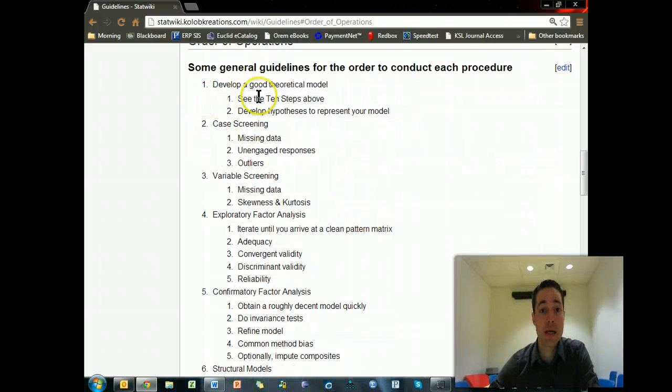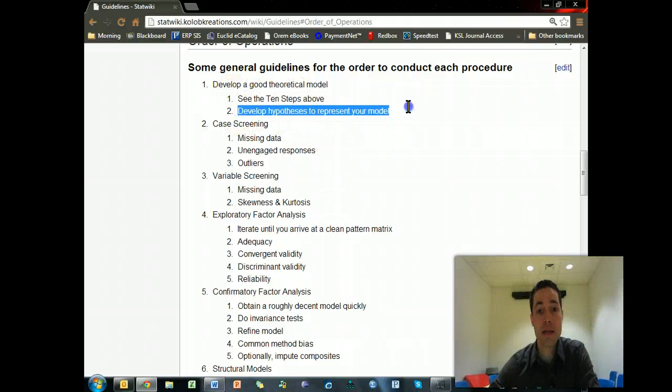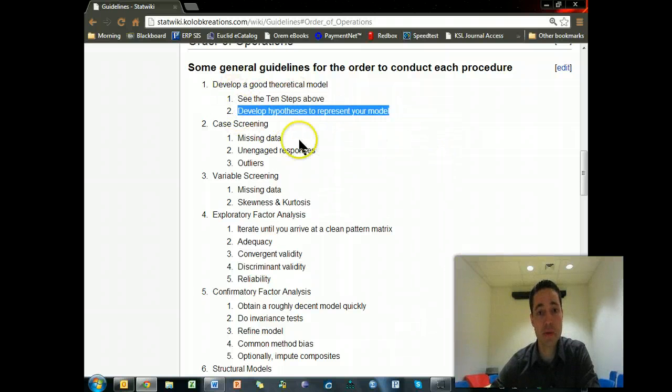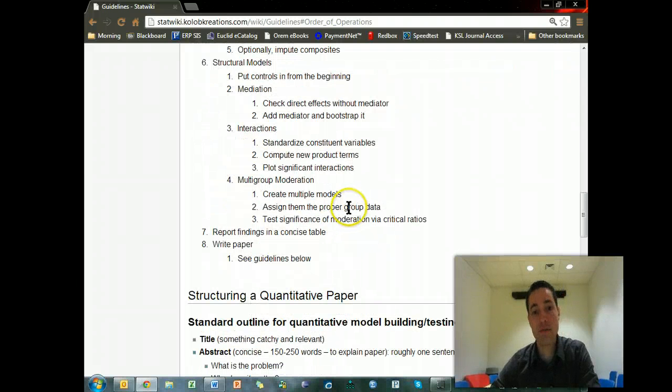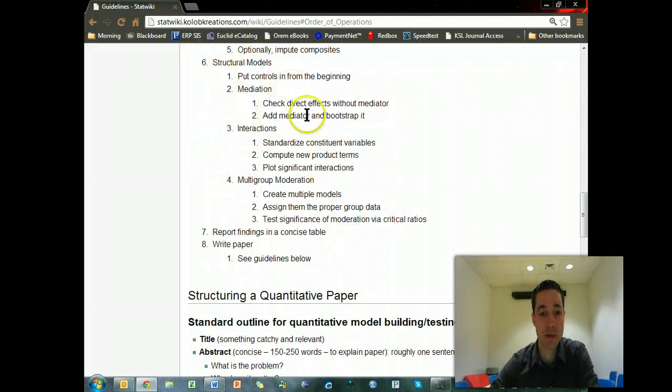So we'll start by thinking about developing a good model using the 10 steps, and then developing hypotheses, which is somewhat difficult, and then going through screening and EFA, CFA, all the structural model stuff like mediation, moderation, and then how to report those findings and write a good paper.